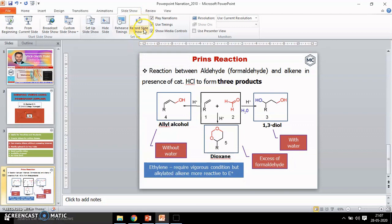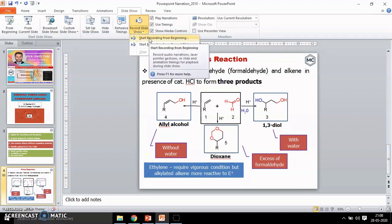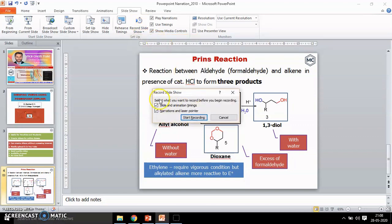And very near to this, you can see record this slideshow. Actually, you can record audio narration in each PowerPoint. And you can use laser point or slide and animation timing for playback during this slideshow. Then next, you click on record slideshow. There are two options here. Start recording from the beginning and start recording from the current slide. Click on that from the beginning. You get a dialog box like this. Select what you want to record before you begin recording. Just click both slide and animation timing and narration and laser pointer. Then click on start recording.